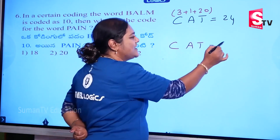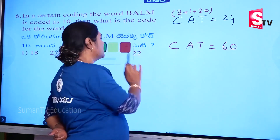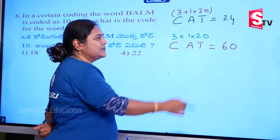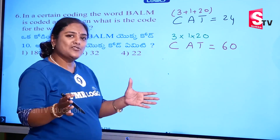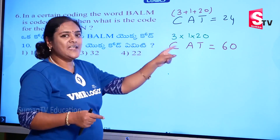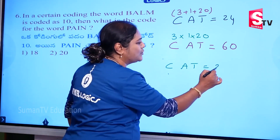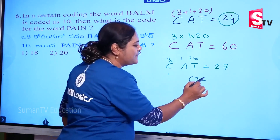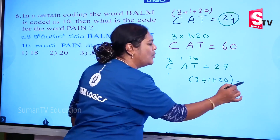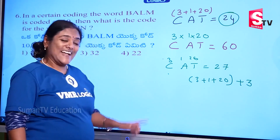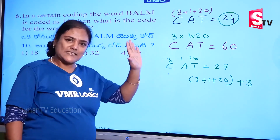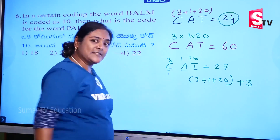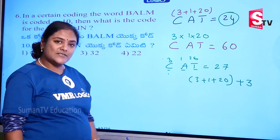CAT — if coded as 60, that means multiply: 3 into 1 is 3, 3 into 20 is 60. So here plus gives 24, multiply gives 60. Now CAT is equal to 27. If you choose place values 3, 1, 20 — 3 plus 1 plus 20 = 24, not 27. So we do a constant number: the sum of values is 24, plus constant 3 (number of letters) = 27. That is sum of place values plus number of letters. You need minimum two examples to check — use two examples to verify the logic is the same.